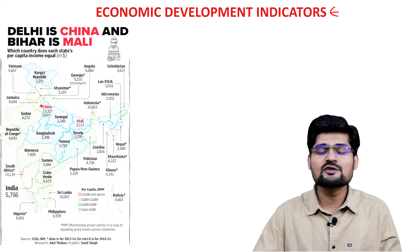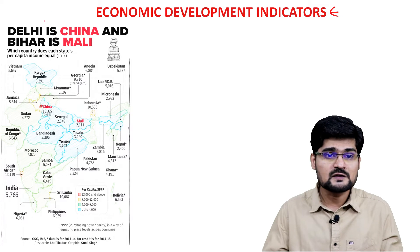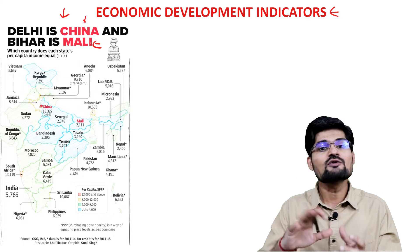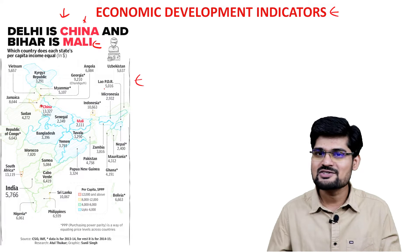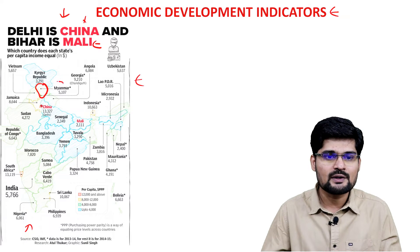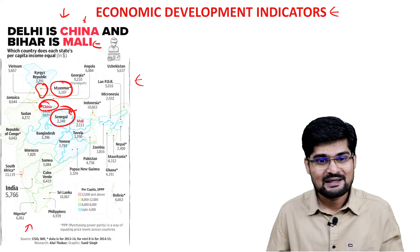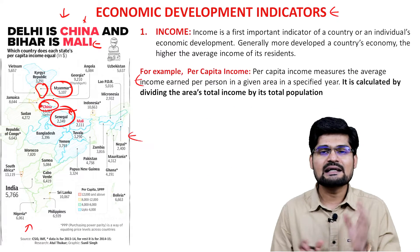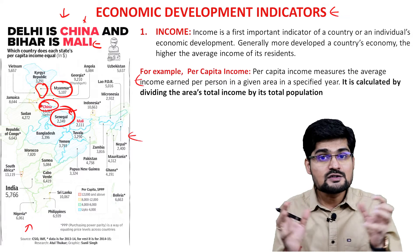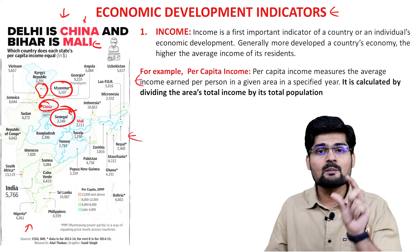Now let's look at economic development indicators. Economic development is about the exchange of goods and services, money, and income. Consider this news item: 'Delhi is China and Bihar is Mali' — comparing per capita income of Indian states to foreign countries. Himachal Pradesh is compared to Myanmar, Delhi to China, and UP to Senegal on the basis of per capita income. Income becomes the first and foremost indicator of a country's and individual's economic development.